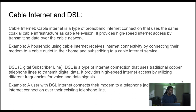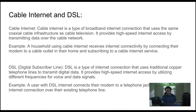Cable internet and DSL. DSL — digital subscriber line — is a type of internet connection that uses traditional copper telephone lines to transmit digital data. It provides high-speed internet access by utilizing different frequencies for voice and data signals. This is what I was talking about — back in the day you couldn't be on your landline and on the internet at the same time. A user with DSL connects their modem to a telephone jack and establishes an internet connection over their existing telephone line.